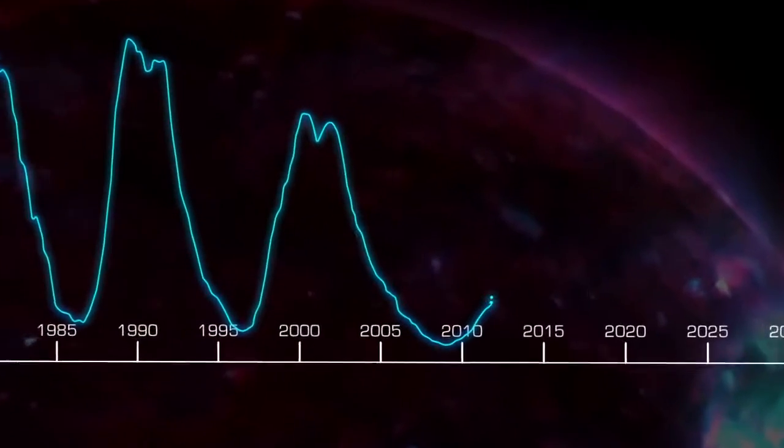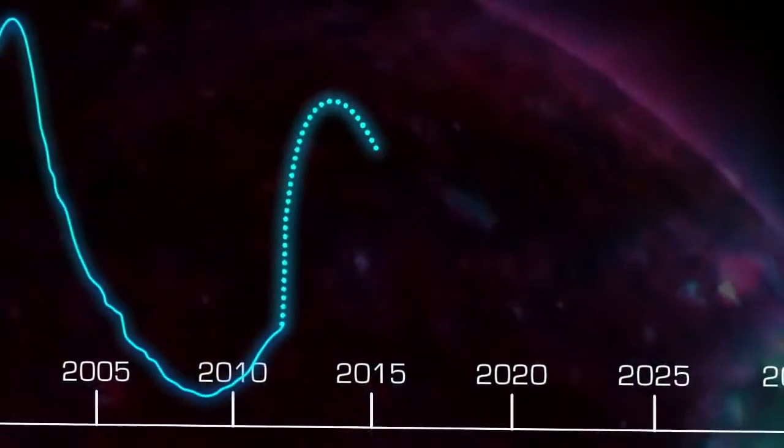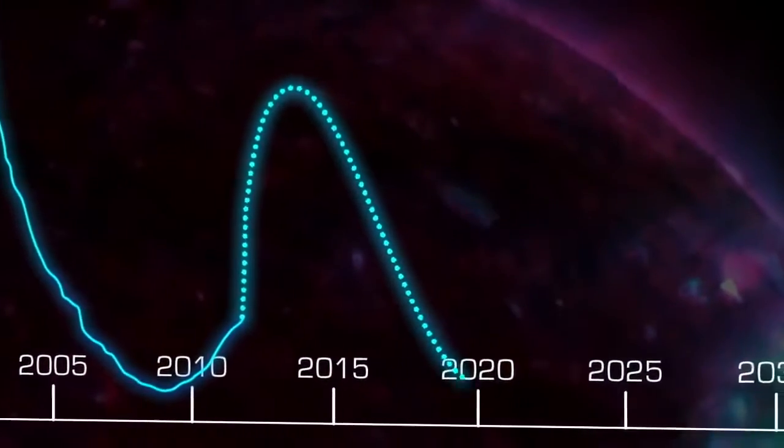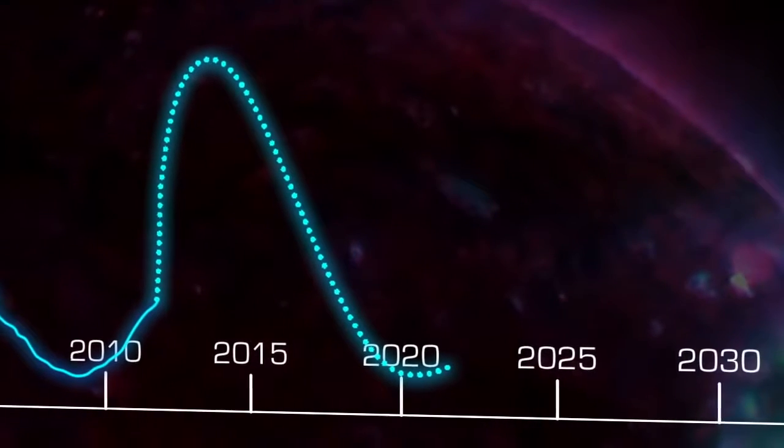Right now, the Sun is approaching solar maximum, so flares and CMEs are more common than they were a few years ago. This cycle may peak in 2013 or early 2014, and should reach its minimum around 2020, although predictions about the Sun are still uncertain.